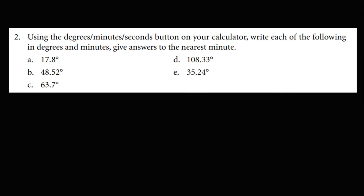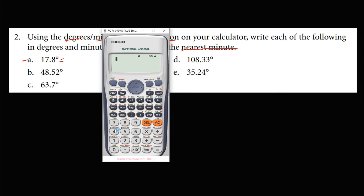For the next problem, using the degrees, minutes, and seconds button, give the answers to the nearest minute. For 17.8 degrees, we have 17.8 degrees, then degree-minutes-seconds equals — that's 17 degrees and 48 minutes.